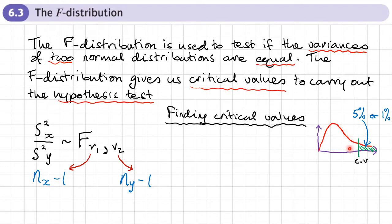I've drawn a little sketch of what an F distribution might look like. The way the tables work, they give you the area to the right that exceeds a particular value. The areas are to the right, and the table gives areas of five percent and one percent — five percent is the top half of the table, one percent is the lower half. That's straightforward if I want to work out an upper critical value, because I can just look the value up in the table.